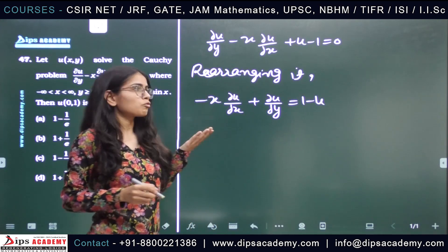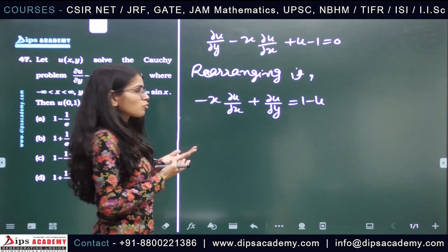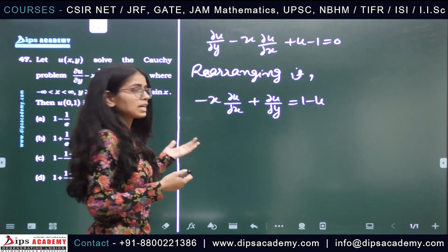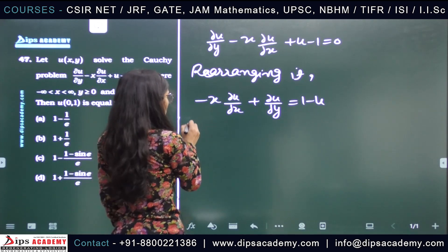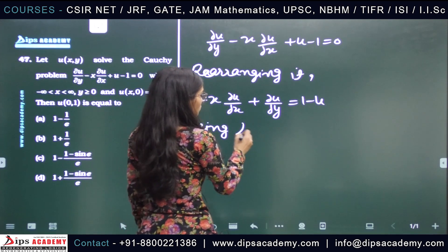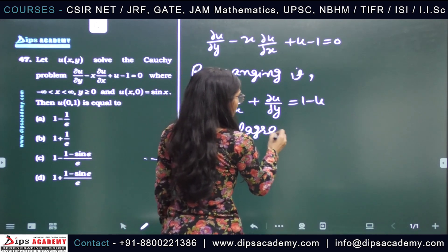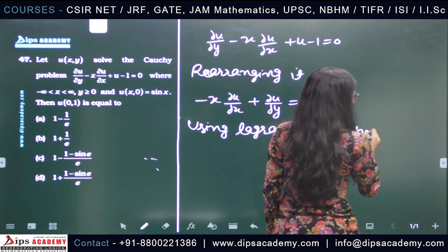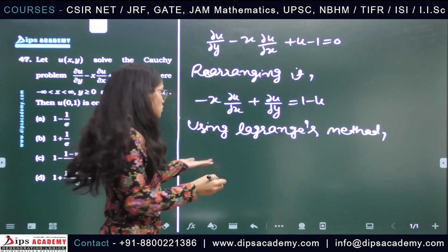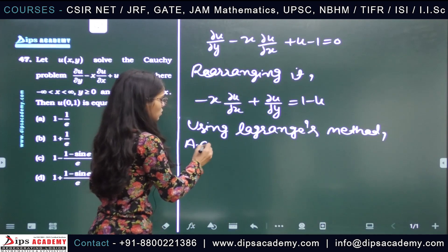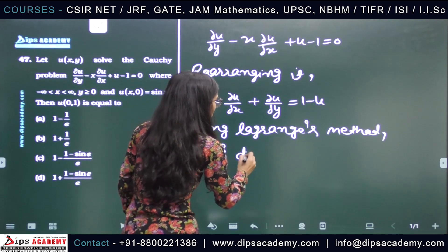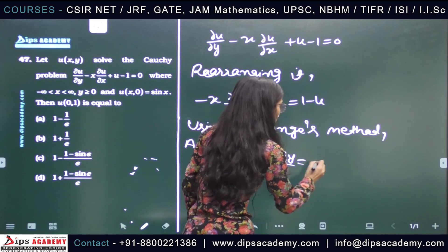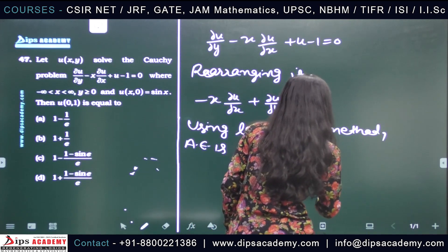To find the general integral of the quasi-linear partial differential equation, we use Lagrange's method. Using Lagrange's method, the auxiliary equation is: dx/(−x) = dy/1 = du/(1 − u).